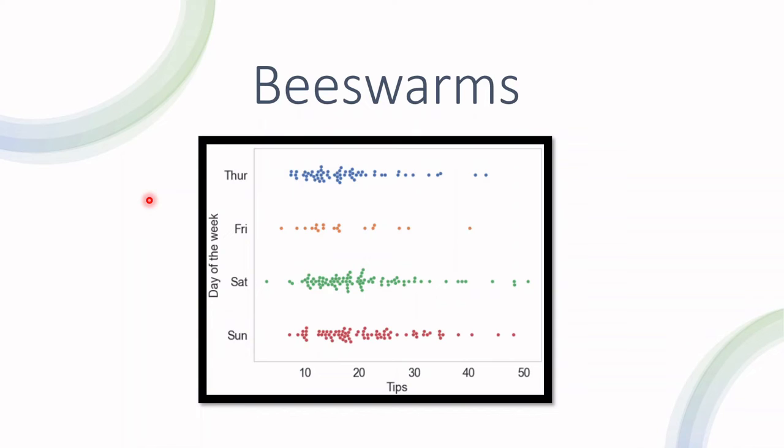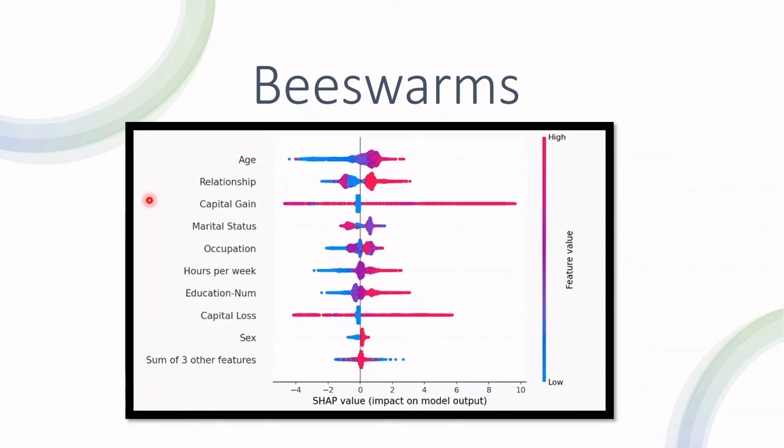For this example, we're dealing with a dataset that has two classes, two labels. One is if someone is earning more than fifty thousand dollars a year - that's a positive class.